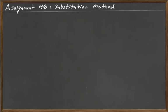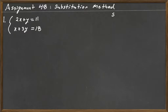This is the fourth video for assignment 48, and we're going to be looking at solving systems of equations by the substitution method. The goal is to solve one of the equations for one of the variables, substitute that into the other equation, solve it, and that'll give you x or y, then back substitute to get the other variable that you're missing.